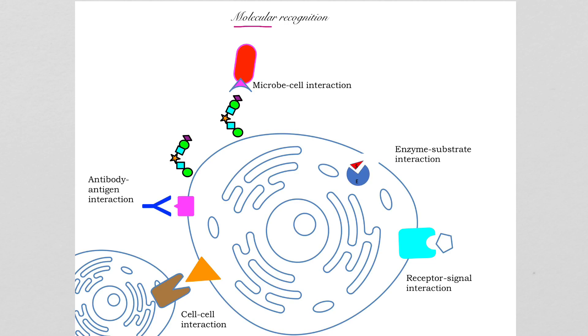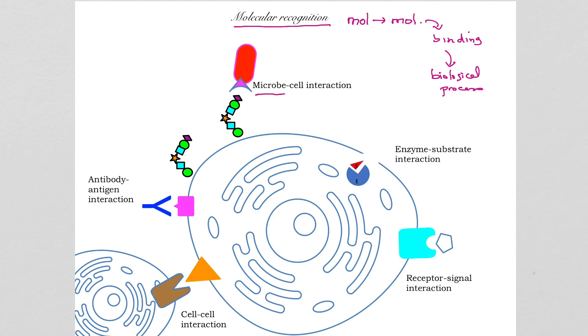In today's video let's look more closely at this phenomenon that we call molecular recognition. Molecular recognition is basically molecules recognizing other molecules, which then leads to binding. And after that binding, some biological process happens. This is very, very important because we see so many examples of this happening in our body all the time — for example, during infections the microbes recognize and bind some molecules in your body.